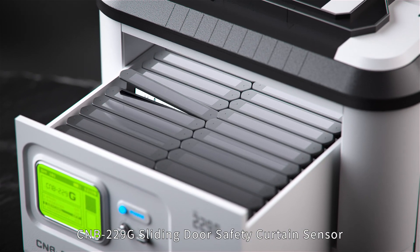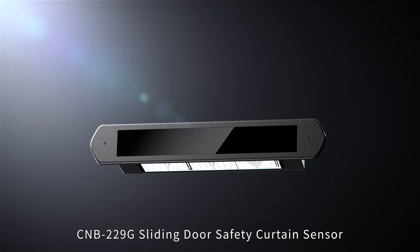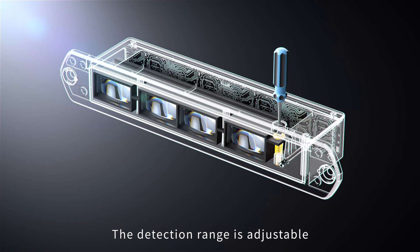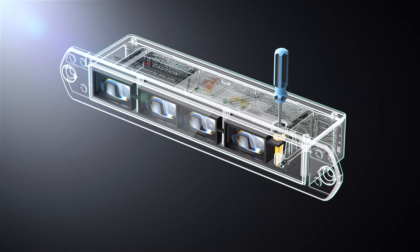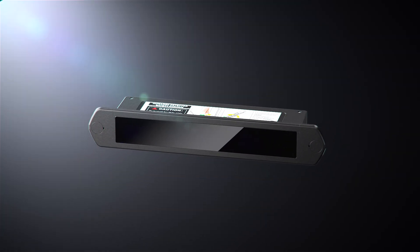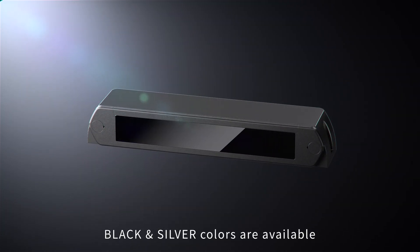CNB220 9G Sliding Door Safety Curtain Sensor. The detection range is adjustable. Black or silver colors are available.